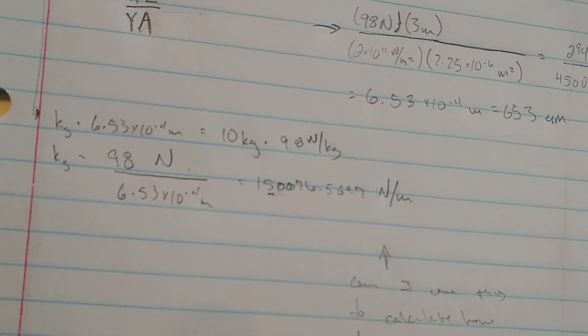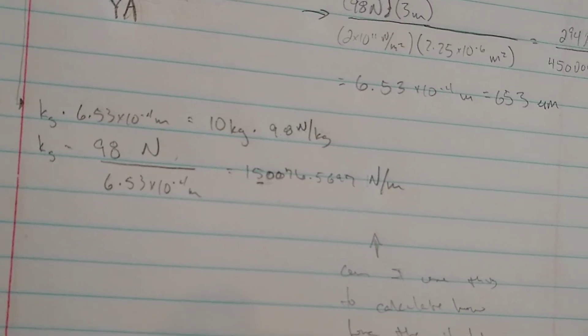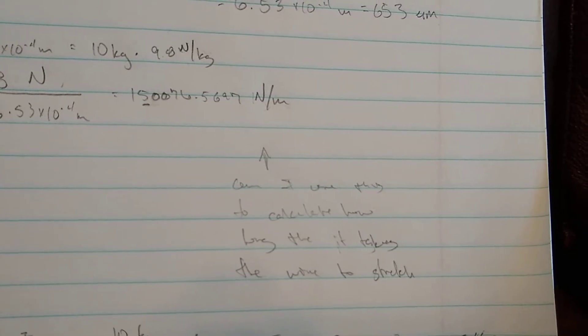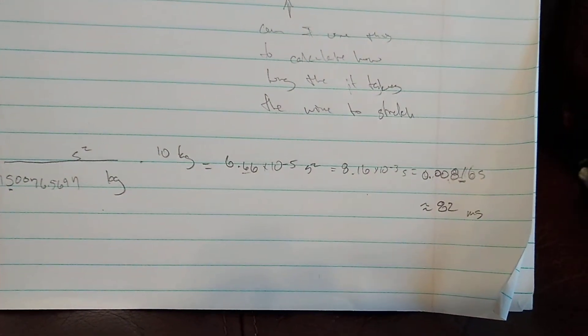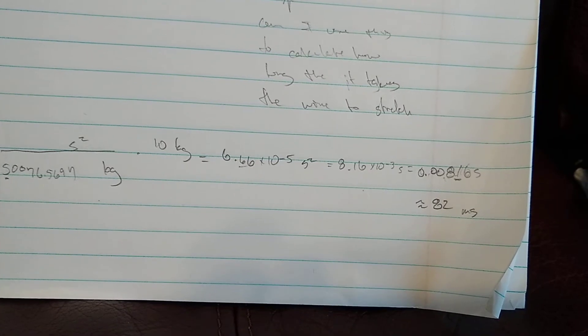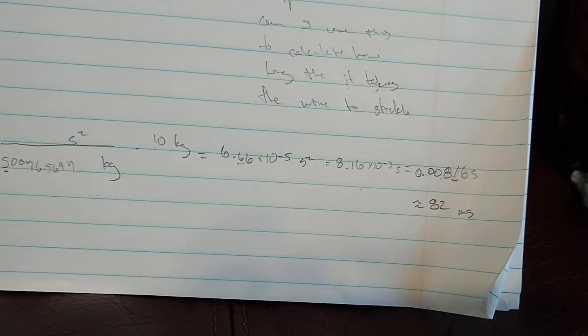And we can find the spring constant is a very large number. And I was speculating if I could use that number right there, the newtons per meter, and just change our units for newtons, and use that to find the amount of time it took for this wire to stretch that stretch that we calculated.